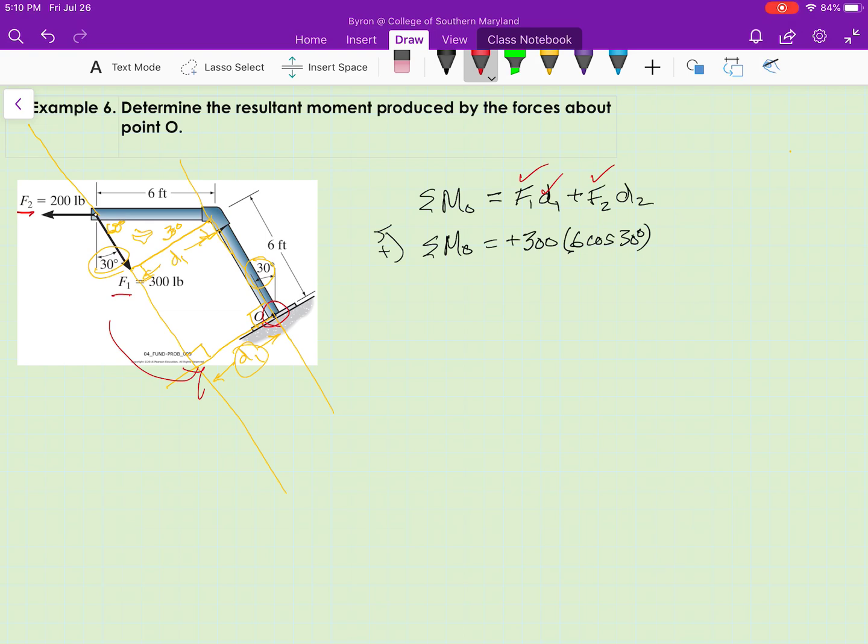Now let's look at D2. We need the line of action of F2, which goes like that. Perpendicular distance from F2, the line of action of F2 down to point O is right there. That's a right angle. So I have a right triangle here, whose hypotenuse I know is six feet. I have the 30 degree angle there. And let's mark D2 before we forget.